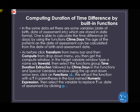Computing duration of time difference using built-in functions. In the same dataset, there are variables — date of birth, date of assessment — which are stored in date format. One is able to calculate the time difference using the function CTIME.DAYS. The age of patients on the date of assessment can be calculated from the date of birth and assessment date. When you want to calculate age, you minus the present year from the year the patient was born.